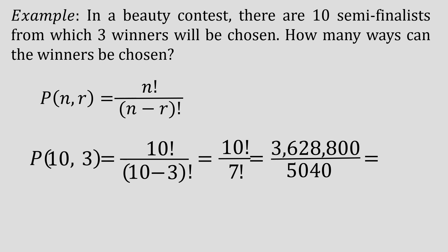Lastly, divide the value, and the quotient would be 720. In other words, the number of ways that the winners can be chosen is 720 ways.